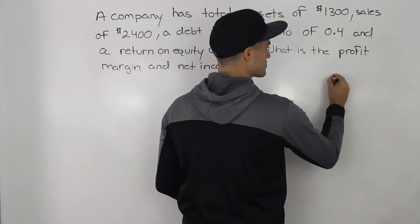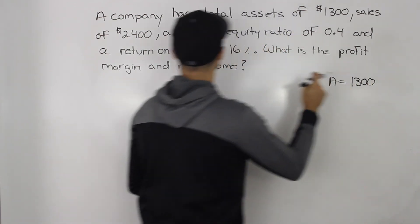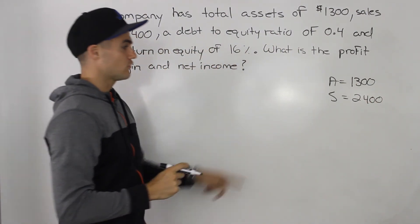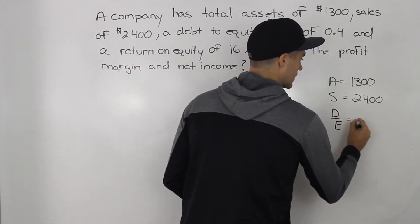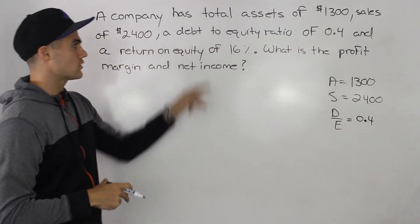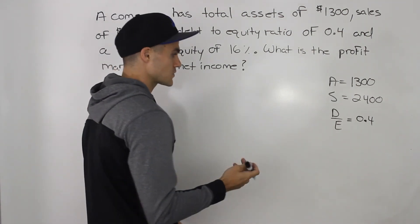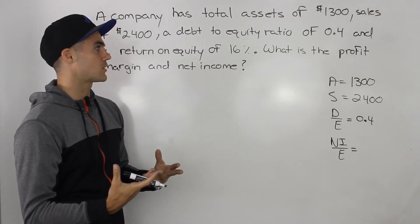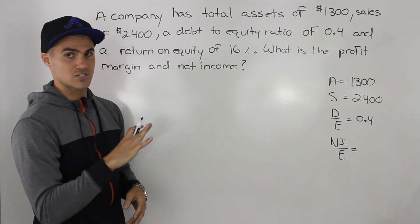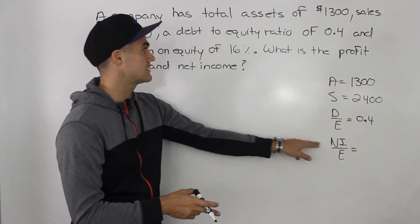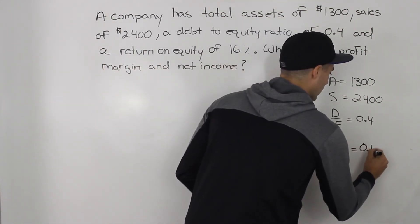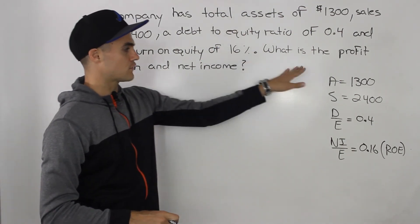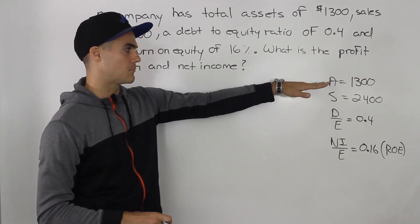Let's go one by one here. Assets — I'll just put A equals $1,300. Sales is $2,400. The debt-to-equity ratio is 0.4, so I like to put the actual ratio: debt over equity equals 0.4. And we are given the return on equity of 16%. Return on equity is net income over equity, and when you're doing math with ratios they have to be in decimals, so 16% we would convert to 0.16. That's the first step — took all the information and put it as a list in bullet point form.